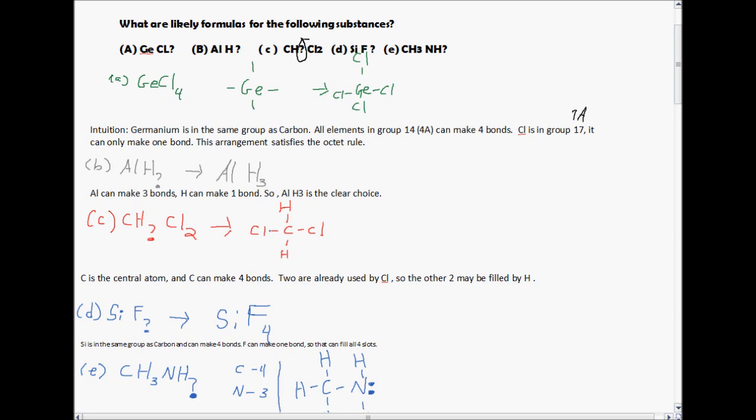For D, silicon is in the same group as carbon, and so it can make four bonds. So SiF4, fluorine can fill all four slots.